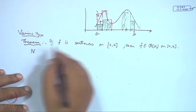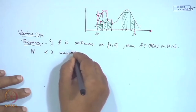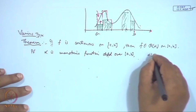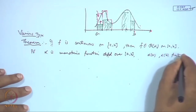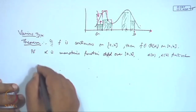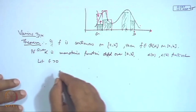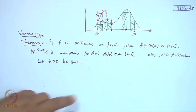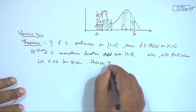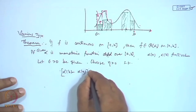Let us see the proof. Since α is a monotonic function defined on [a,b], α(a) and α(b) are finite values and α(b) - α(a) is a fixed number. Let ε > 0 be given. Choose η > 0 such that [α(b) - α(a)] · η < ε. This is possible since α(b) - α(a) is finite.